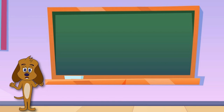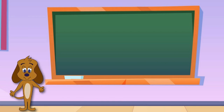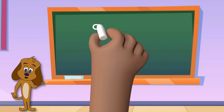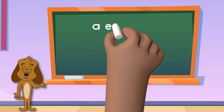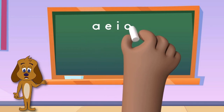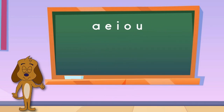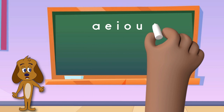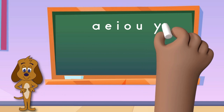As you probably remember, vowels are the letters A, E, I, O, and U, and sometimes the letter Y.